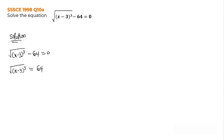From here I can easily square both. So I have the root of (x minus 3) cubed squared equals 64 squared. This will nullify the root sign. Then I have (x minus 3) cubed equals 64 squared, which gives me 4096 as my answer.